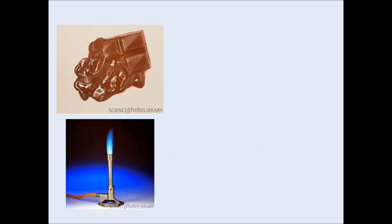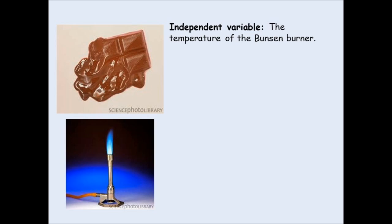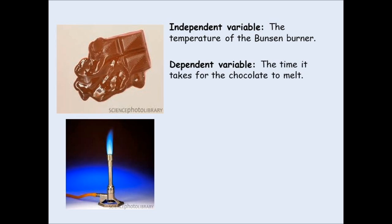Let's go through an example. If you wanted to investigate how long it took a bar of chocolate to melt at different temperatures, then the thing you would change — your independent variable — would be the temperature of the Bunsen burner. The thing you would measure — your dependent variable — would be the time it took for the chocolate to melt. So you are hoping that changing the temperature of the Bunsen burner will affect how long it takes for the chocolate to melt.